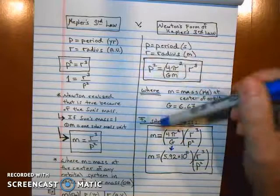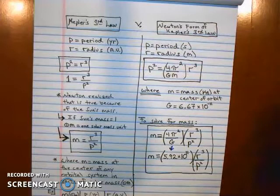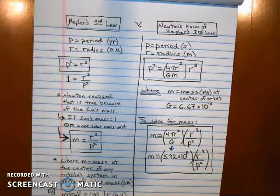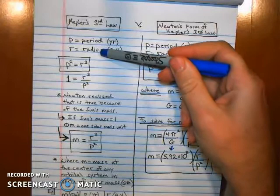So when Kepler developed his third law, and he found this harmony, this beautiful relationship between the period of a planet and its semi-major axis or average radius, he simply said that the greater the period, the greater the radius, and vice versa. A planet further from the sun has a longer period.